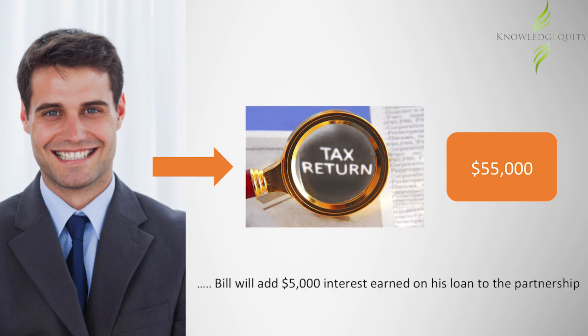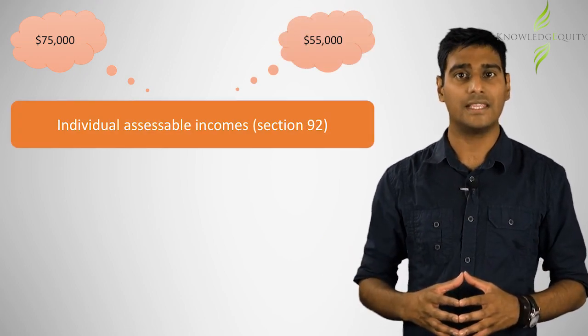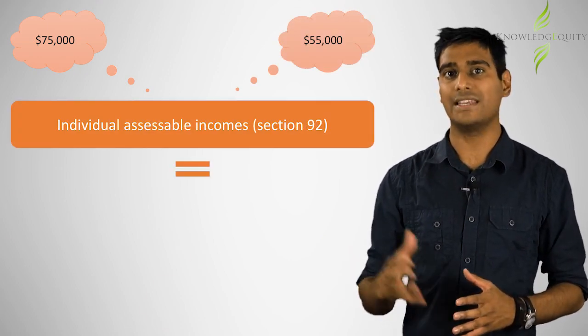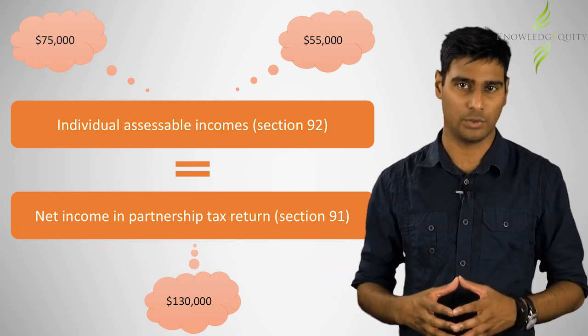Bill will also add the $5,000 interest earned on the loan to the partnership to his assessable income — not because of section 92, but because interest constitutes assessable income irrespective of who the borrower is. Note that the aggregate of the amounts that Alice and Bill put in their individual assessable income under section 92 is equal to the net income amount in the partnership tax return under section 91.